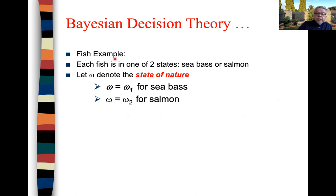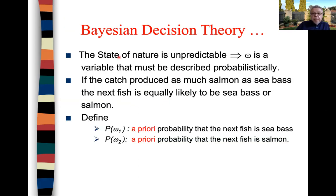Let's look at our fish example. Each fish is in one of the two states — either a salmon or a sea bass. We denote W as the state of nature, meaning that if W equals W1 it's a sea bass, and if W equals W2 it's a salmon. The state of nature is unpredictable — we don't know W. When the fish comes on the conveyor belt, we don't know whether it's a sea bass or a salmon. So it's a variable that must be described probabilistically, meaning it's a random variable that can take a value with a certain probability.